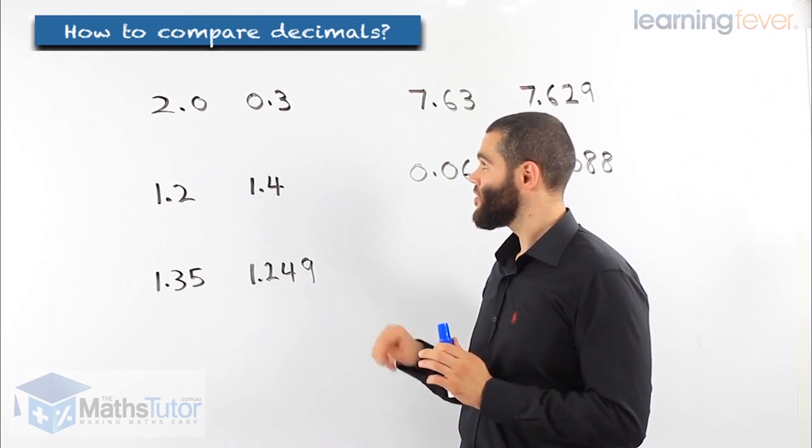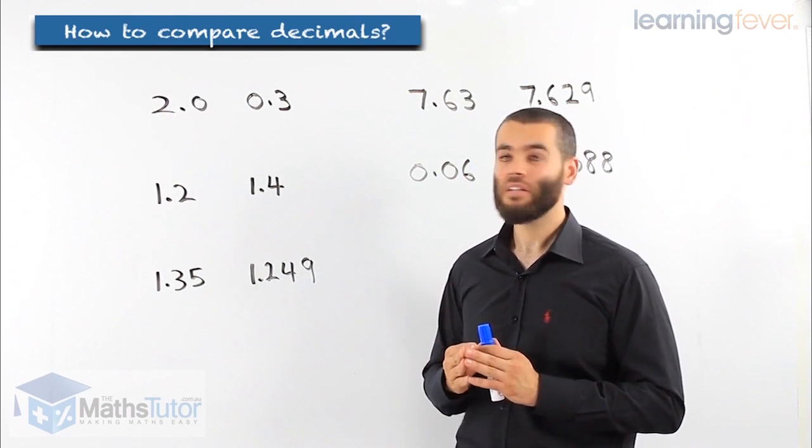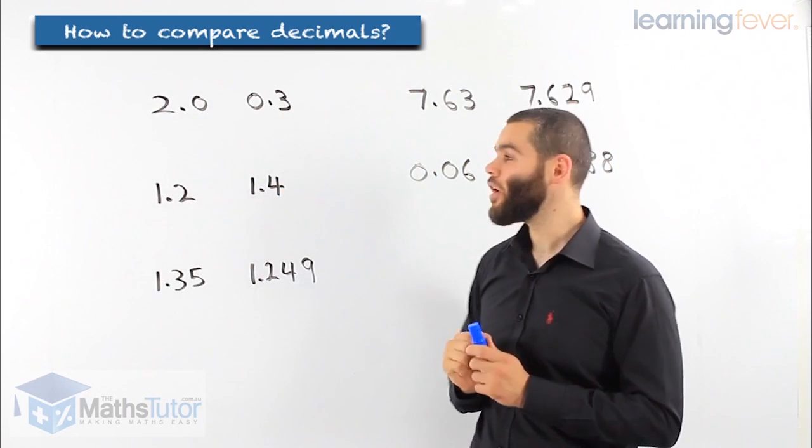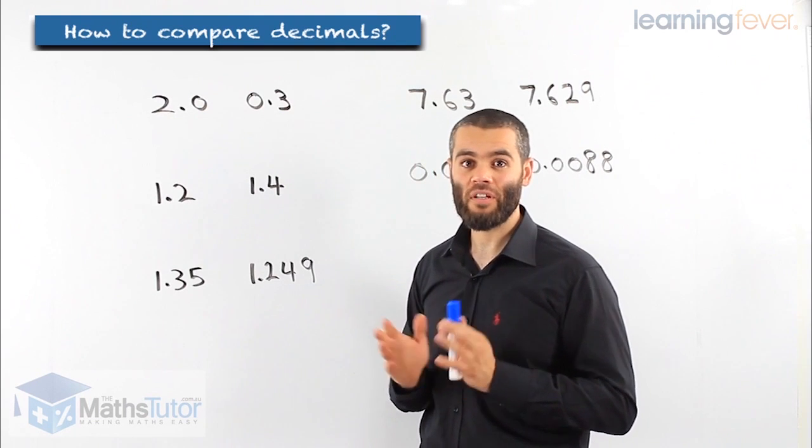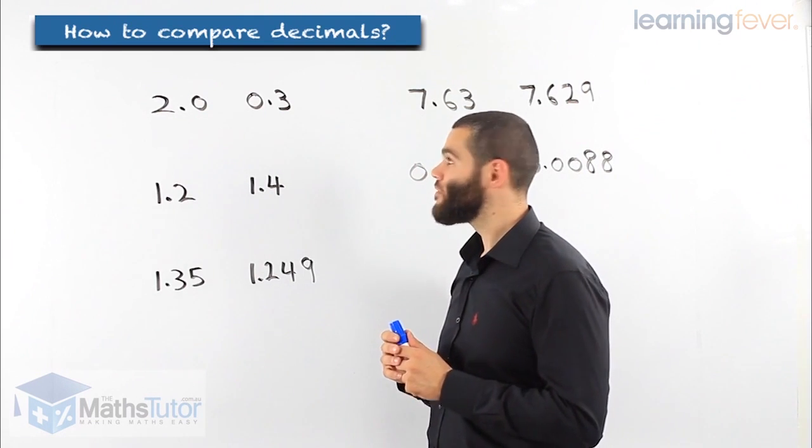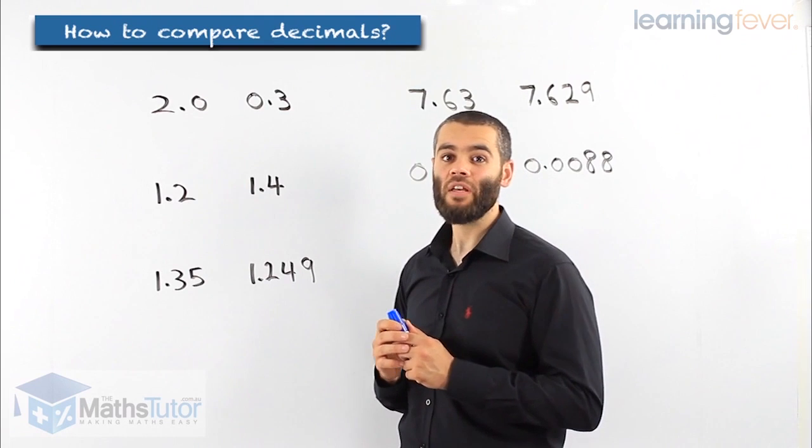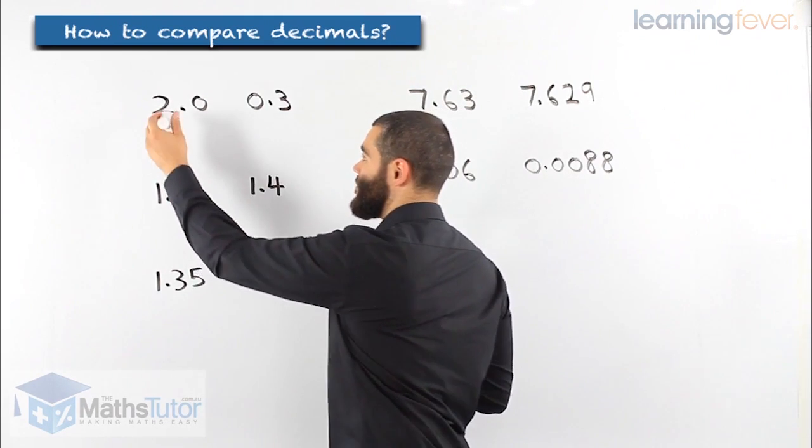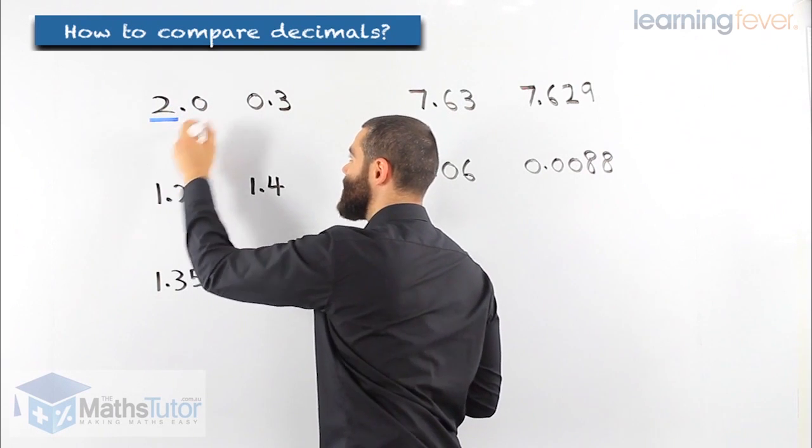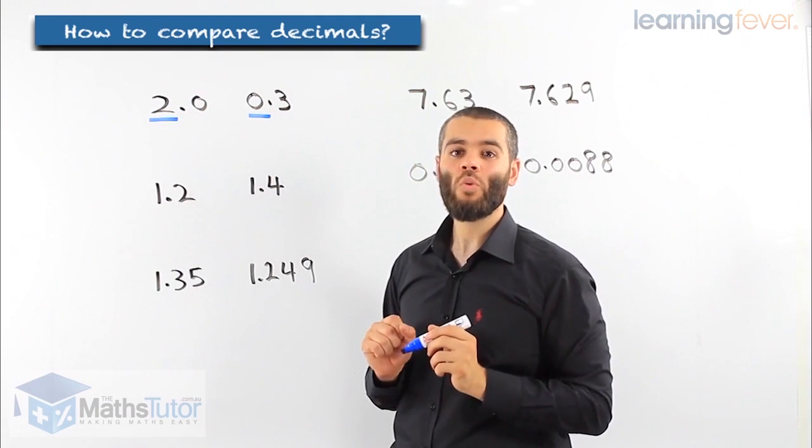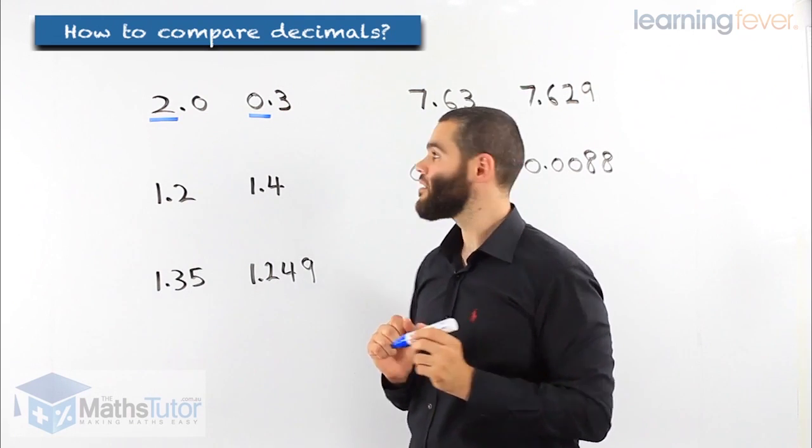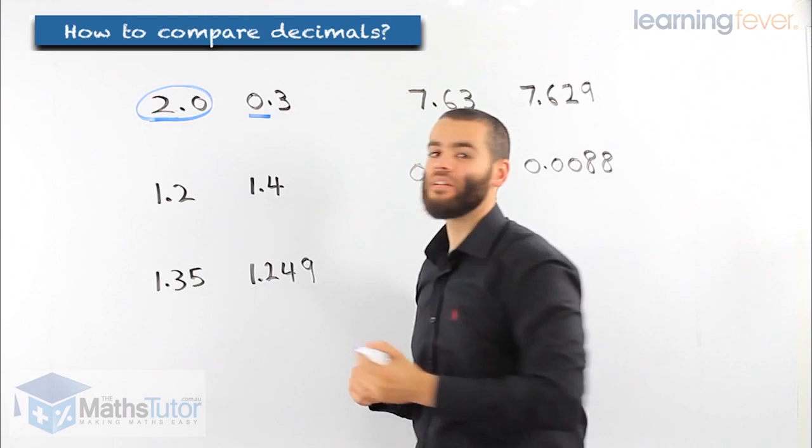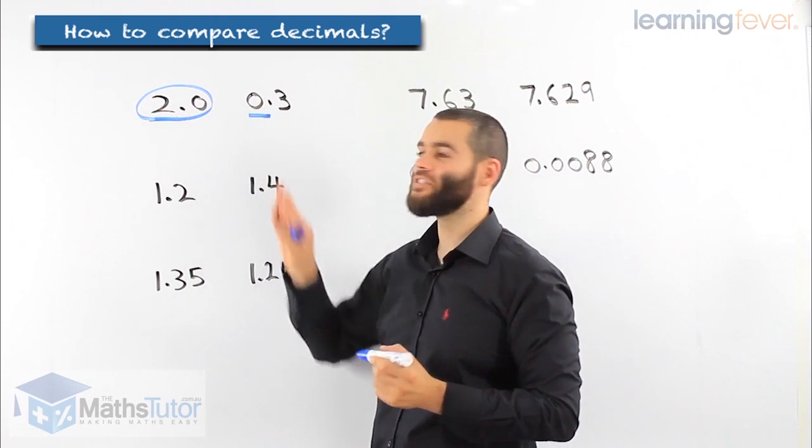We're asked to compare, find the larger decimal or find the larger number between these two. We have 2.0 and 0.3. Very simple. We start with the place values on the left. We compare. We have the two here is in the ones, and we have the ones here. Which one is larger? In this case, this one is larger. Two is larger than zero.